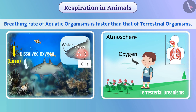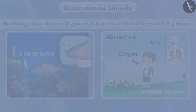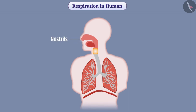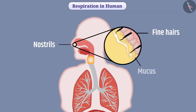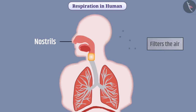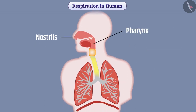In different terrestrial organisms, oxygen is absorbed by different organs. In humans, air enters inside the body through the nostrils. Nostrils consist of a layer of fine hairs and mucus. These fine hairs and mucus filter the air that goes inside the body so that dust and impurities present in the air do not enter the body. After this, the air reaches the trachea via the pharynx and larynx.